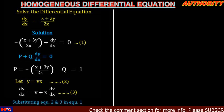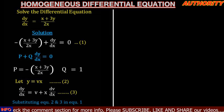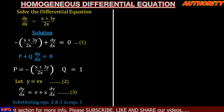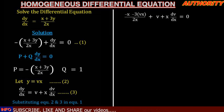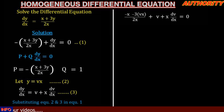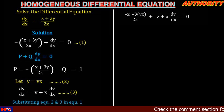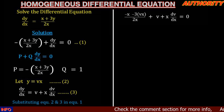We are going to substitute equation 2 and equation 3 into equation 1. In equation 1 we have minus (x + 3y)/(2x) + dy/dx. In place of y we put vx, and in place of dy/dx we put v + x(dv/dx), equal to zero. This gives us minus (x + 3vx)/(2x) plus v + x(dv/dx) equal to zero.